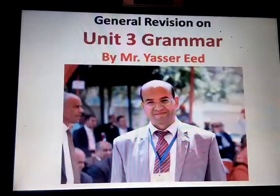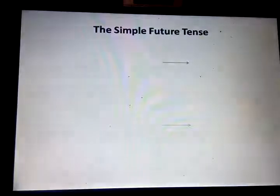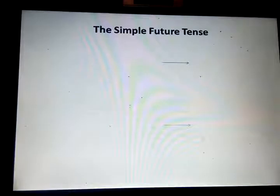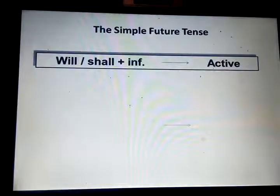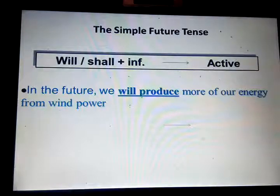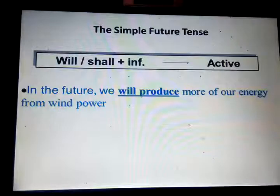Hello everyone, Mr. Yes sir with you, and today we're going to revise Unit 3 grammar. Let's begin. The simple future tense in the active form. Example: In the future we will produce more of our energy from wind power. The verb form is 'will produce' — will plus infinitive — because we are speaking about the future.